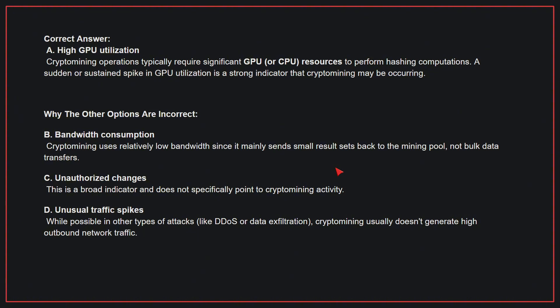Why the other options are incorrect: B — Bandwidth consumption. Crypto mining uses relatively low bandwidth since it mainly sends small result sets back to the mining pool, not large data transfers. C — Unauthorized changes. This is a broad indicator and does not specifically point to crypto mining activity. D — Unusual traffic spikes. While possible in other types of attacks, crypto mining usually doesn't generate high outbound network traffic. Therefore, the correct answer is A.